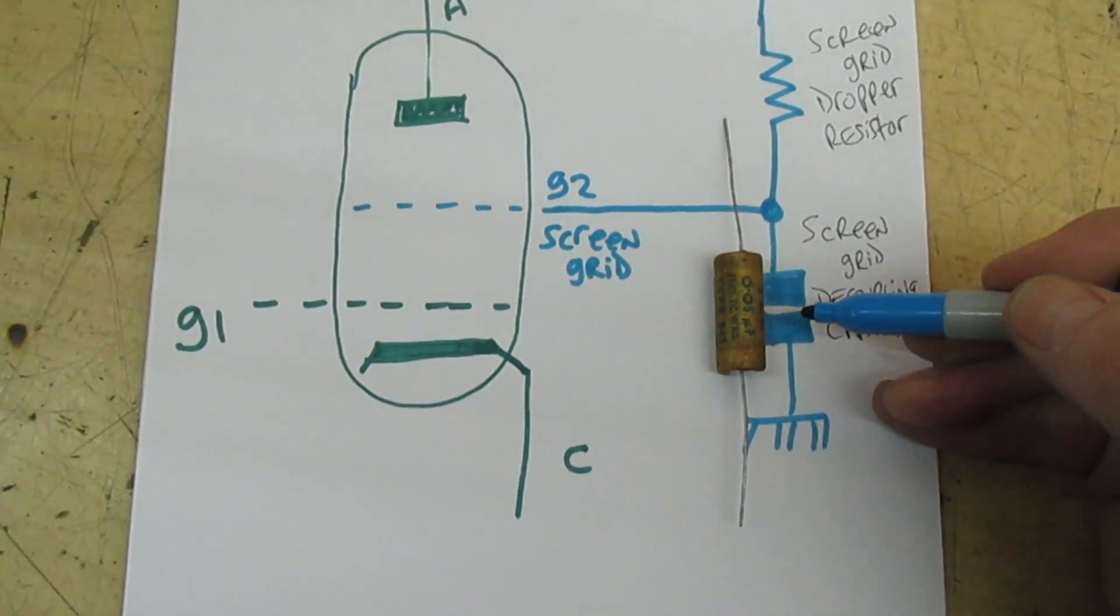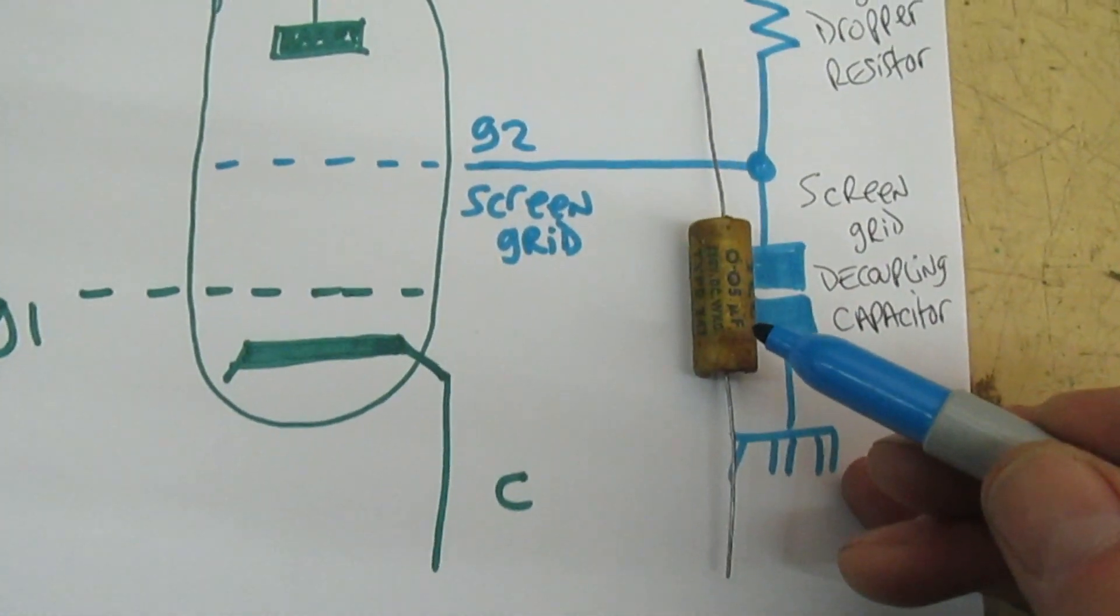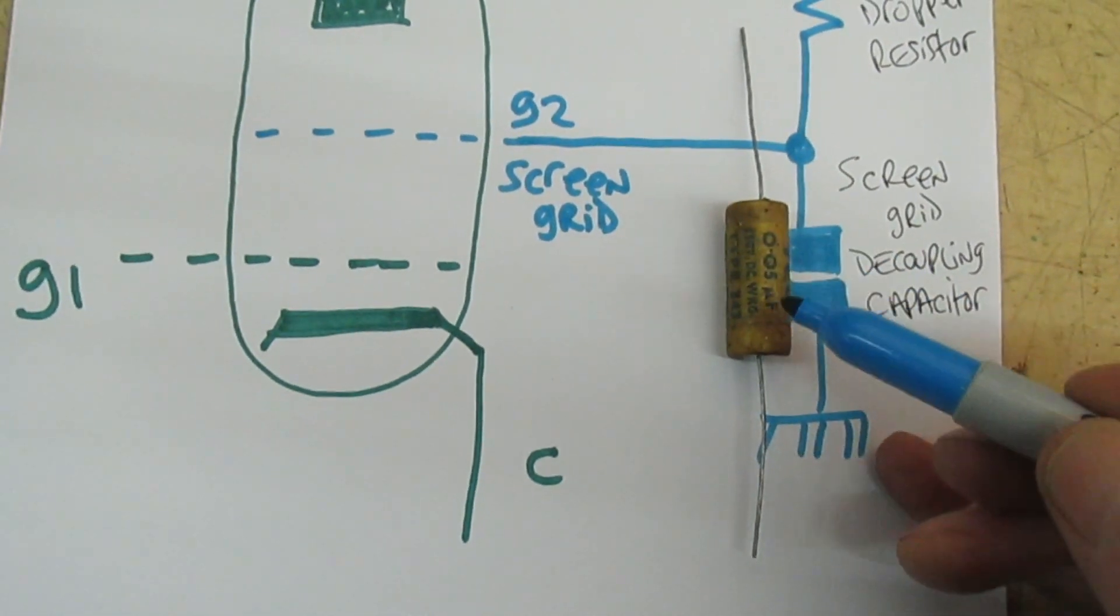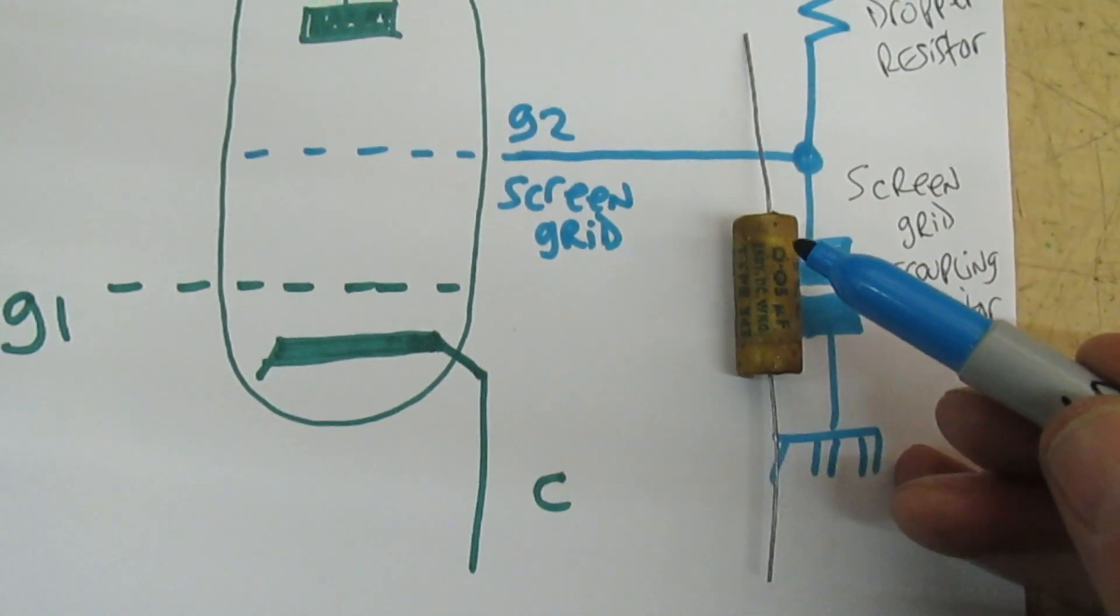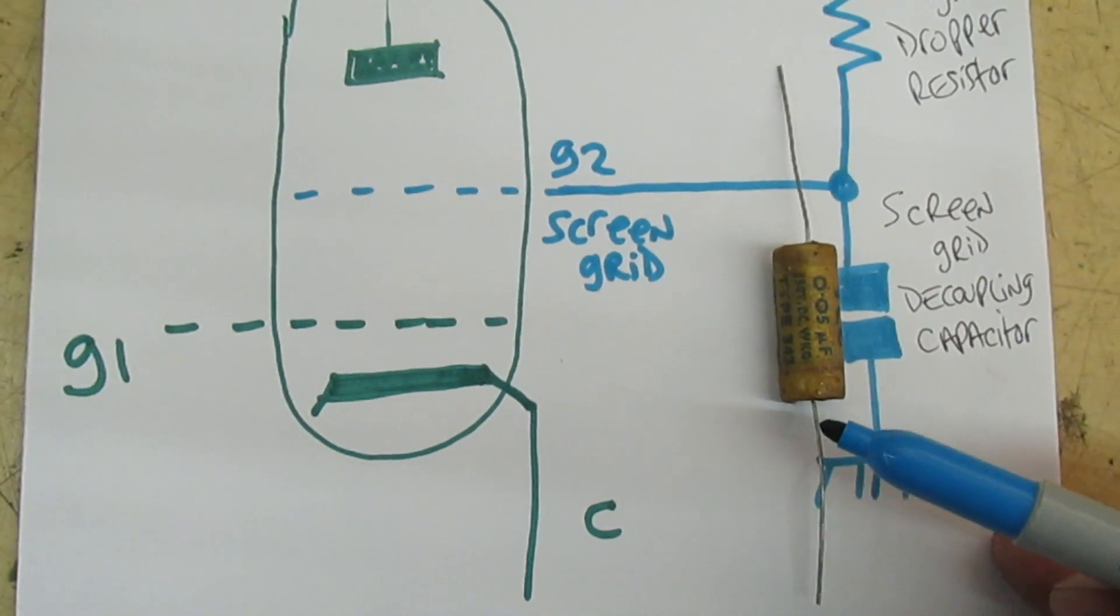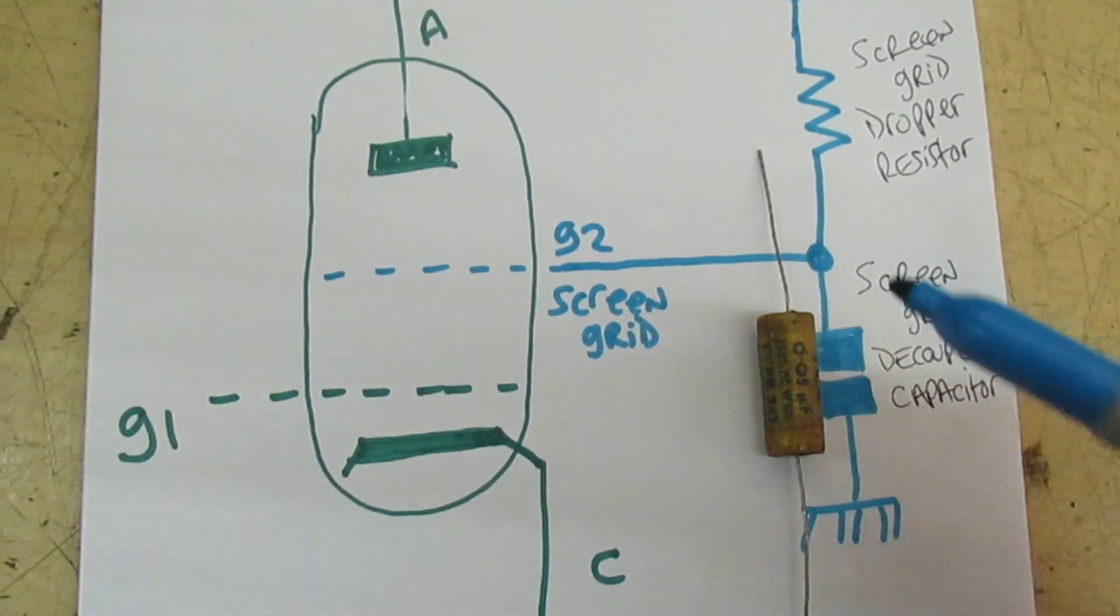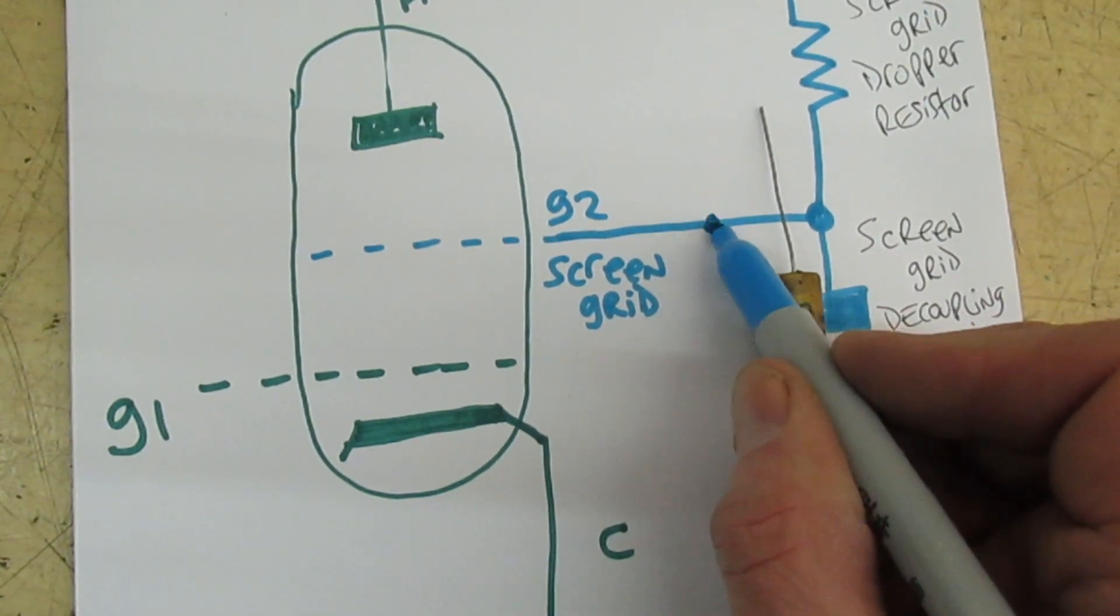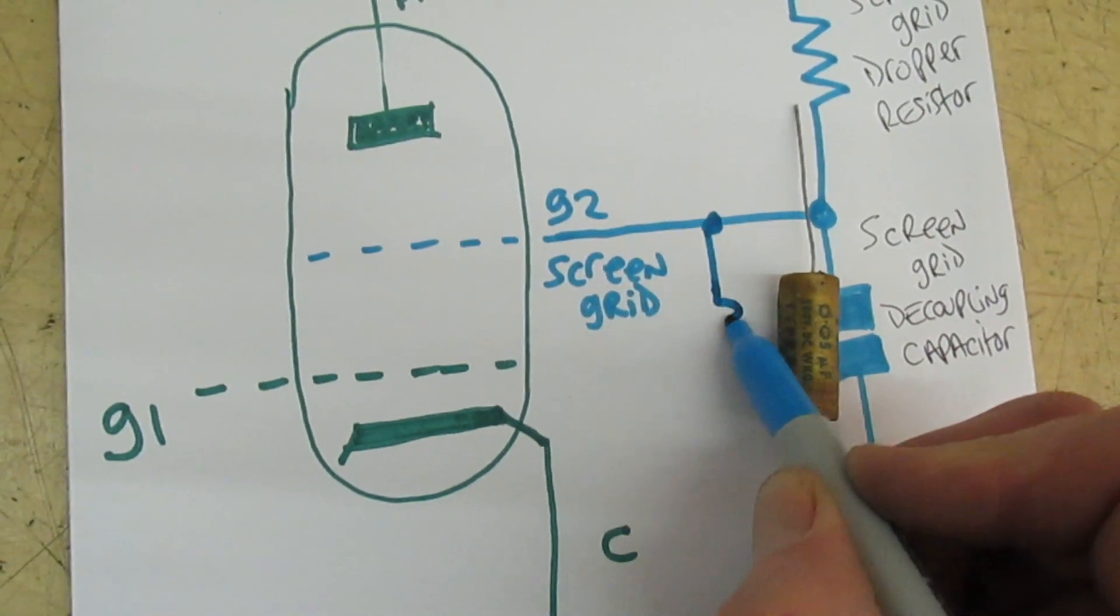We've put the wax paper capacitor in place of the screen grid decoupling capacitor. With these wax paper capacitors, over time the paper absorbs moisture out of the atmosphere and the capacitor effectively goes leaky. When I say leaky, it just turns into a resistor.